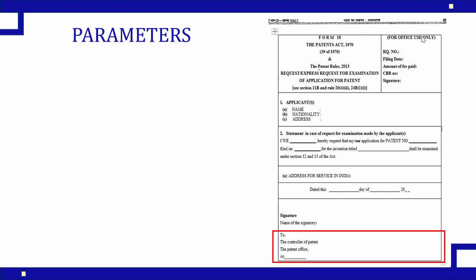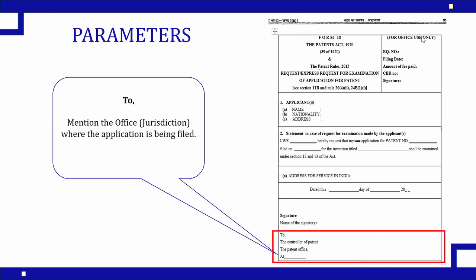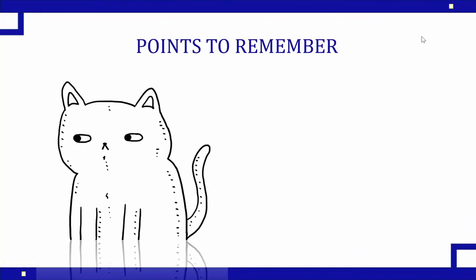The last field is 'To the Controller of Patents, the Patent Office' — this indicates which office the application is being submitted to. Based on your address and the state of your application, the jurisdiction is decided. You need to verify this before submission. At the time of submission of Form 1 and 2 you would have already exercised this, so the same jurisdiction needs to be mentioned here.